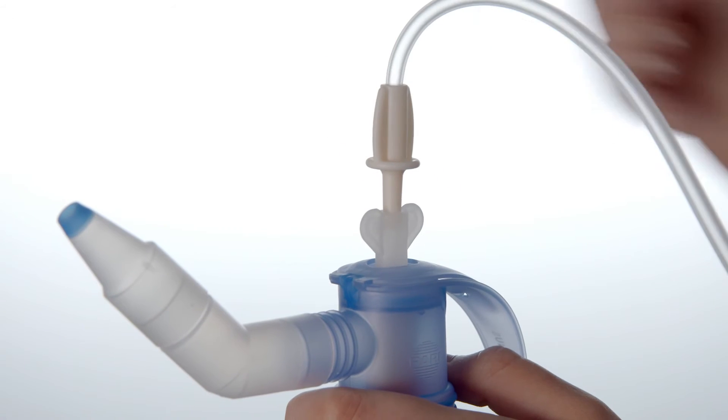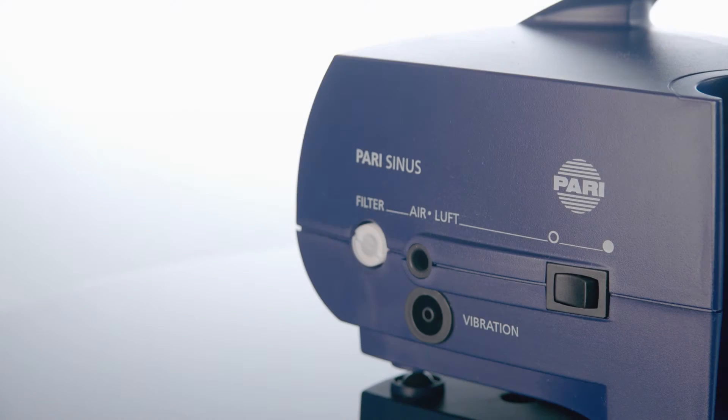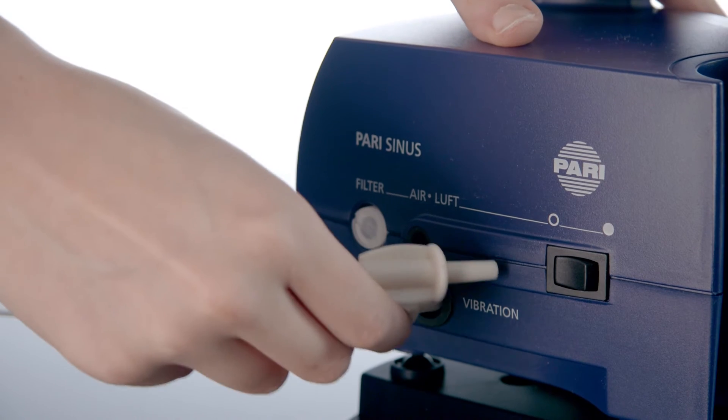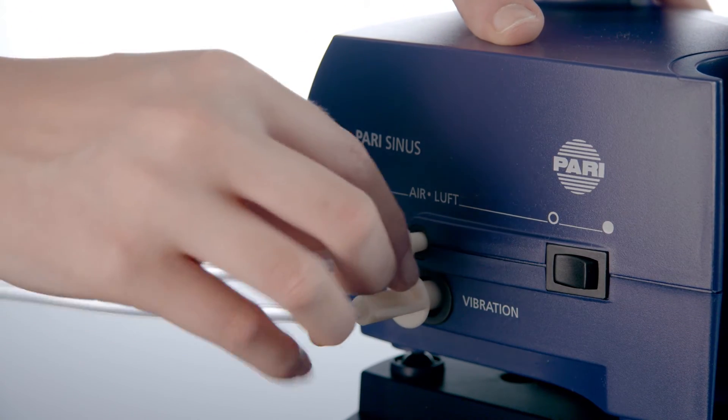The free ends of both tubes should now be inserted into the compressor device. It's not possible to confuse the tubes; the tubes will only fit into the sockets for which they are intended.